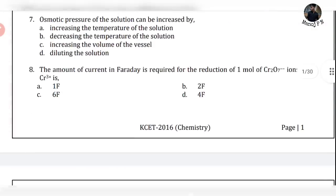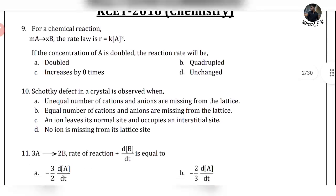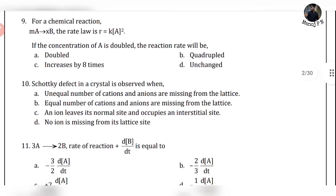Next, question 10 — one of the most fundamental questions. Schottky defect: in Schottky defect, an equal number of cations and anions are missing from their lattice sites. That option is the correct answer. Simple.